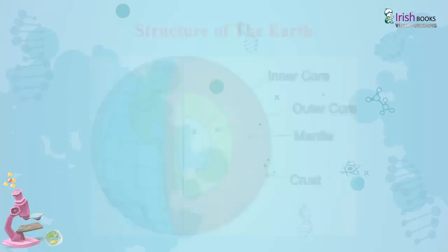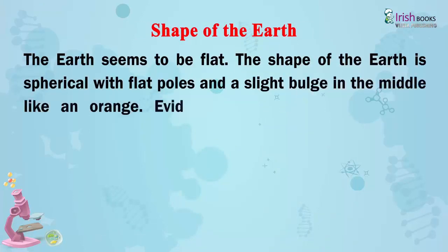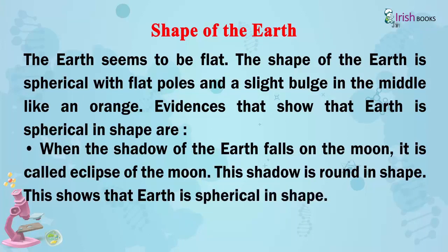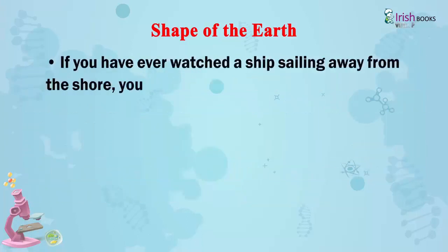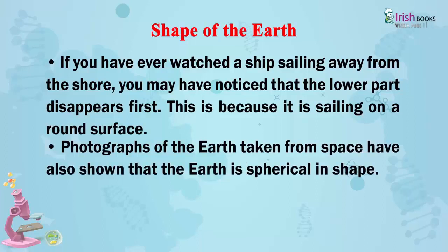The Shape of the Earth. The earth seems to be flat, but the shape of the earth is spherical with flat poles and a slight bulge in the middle, like an orange. Evidence that shows that the earth is spherical in shape: when the shadow of the earth falls on the moon, it is called an eclipse of the moon. This shadow is round in shape, which shows that the earth is spherical. If you have ever watched a ship sailing away from the shore, you may have noticed that the lower part disappears first, because it is sailing on a round surface.